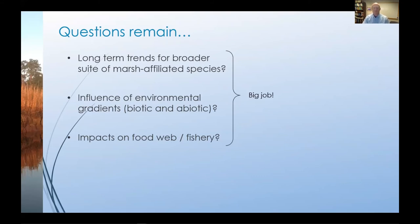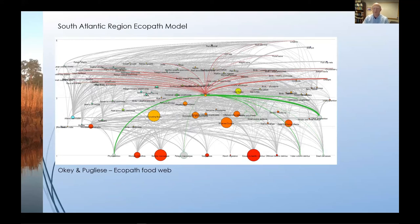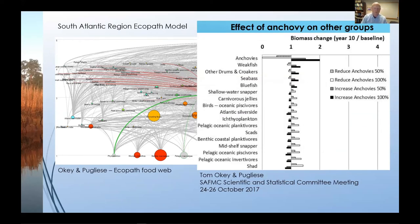This is a big job, but we hope to keep picking away at this problem and we're currently doing this in two ways. First, my master's student Lauren Carroll hopes to use the EMTS data to explore trends in environmental relationships for a broader suite of species. Lauren is also working on adapting a food web model from the South Atlantic for use in Georgia estuaries. This mass-balanced food web model using the program Ecopath with Ecosim can be used to explore the impacts of changes imposed on one or more components of the food web. Here's a depiction of the South Atlantic regional Ecopath model with anchovies highlighted in the middle. The green connections link anchovy with their prey and the red connections link anchovies with predators that rely in part on them for prey. So in a mass-balanced model like this, we can play games such as reducing or increasing anchovies by a certain percentage and evaluate the potential responses of their predators and prey throughout the food web.